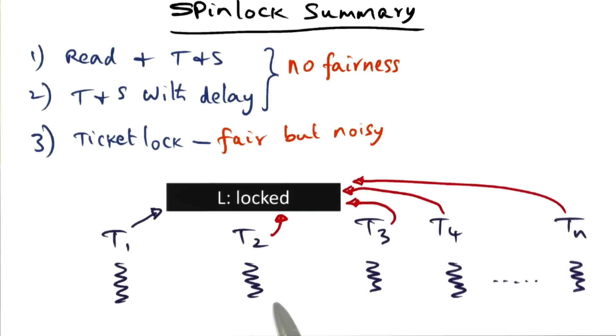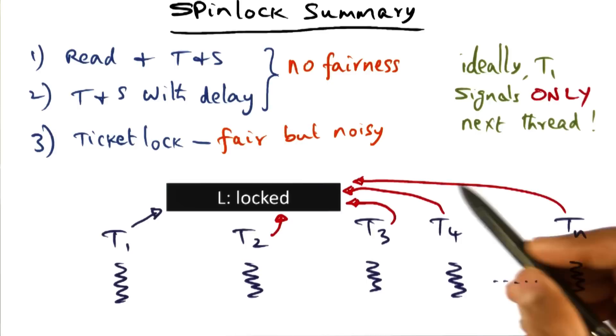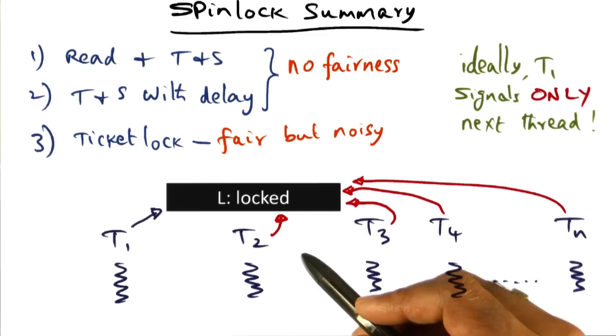Ideally, what we would want to do is that when T1 releases the lock, exactly one of these waiting guys is signaled to indicate that you've got the lock. Because exactly one guy can get the lock to start with, therefore ideally T1 should signal exactly only the next thread and not all of them.